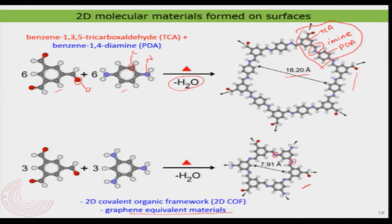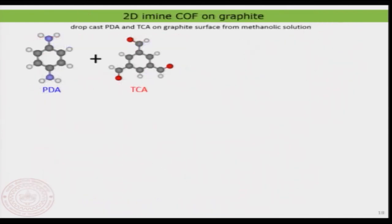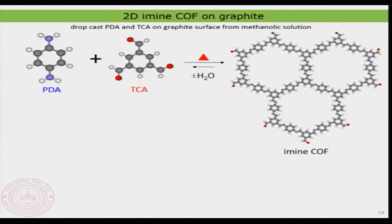Now I want to show the real experiment and its outcome. Looking at the molecules again — this is the chemistry I described — I let them react and make a network. They form a network that continues in both directions, making a nice network of these molecules.